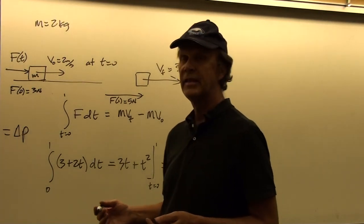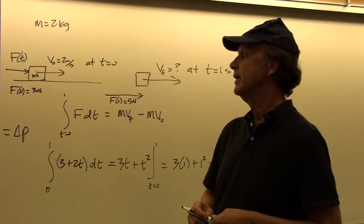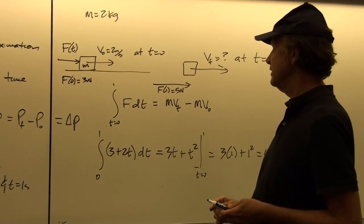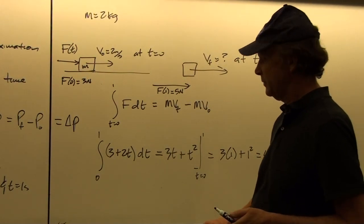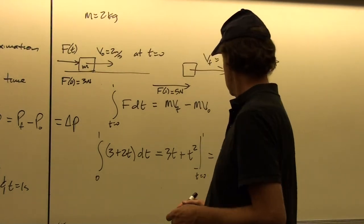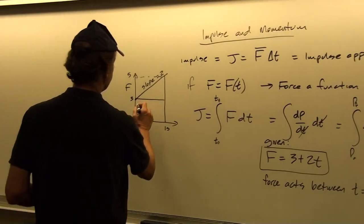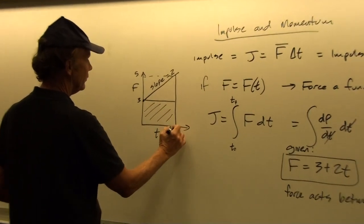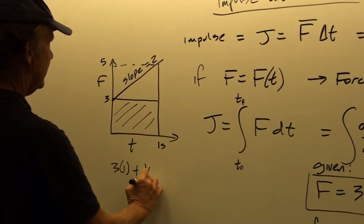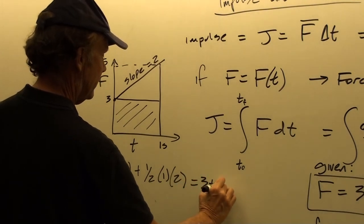You might wonder if there's a better unit for impulse — the answer is no; we leave momentum as kilogram-meter per second, unlike energy which we call a joule. We can double-check the area geometrically: the rectangle is three times one, plus one-half the base (one) times the height (two), giving three plus one equals four. So the area under the force versus time curve matches the integral result.